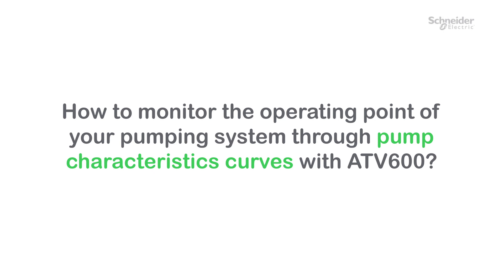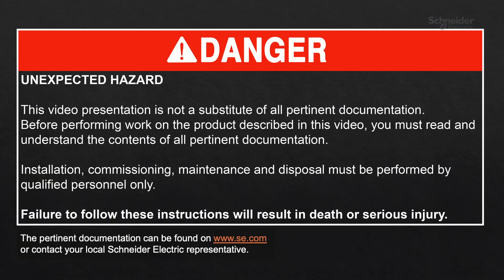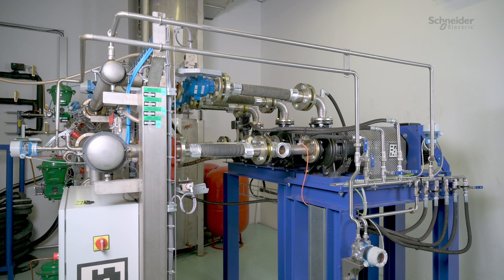How to monitor the operating point of your pumping system through pump characteristics curves with ATV600. Hello, today we will show you how to manage pumping systems with ATV600 by displaying the characteristic curves of the pump and its best efficiency point (BEP). This will allow you to monitor the actual operating point of the pump relative to its BEP.